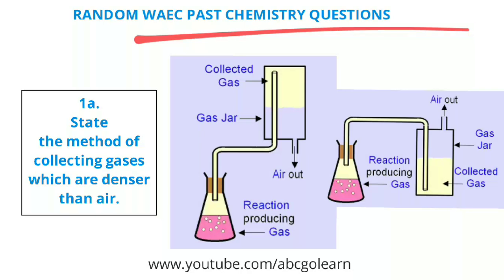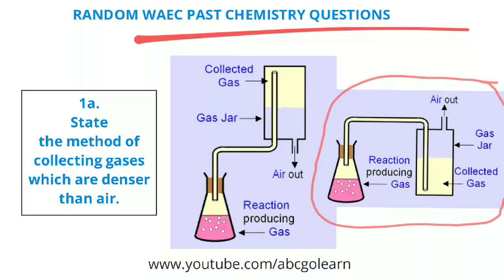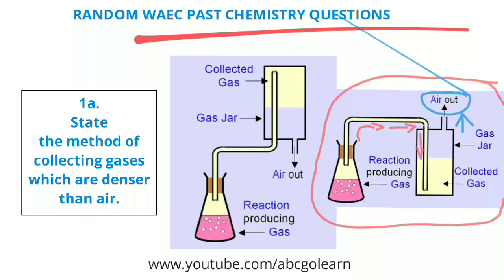The picture you can see right here captures it. The gas is being delivered downwardly — you can see it going downward. But the air that is inside that gas jar is being displaced upwardly — it's being taken out upwardly. So that's the meaning: the gas is delivered downwardly while the air is displaced upwardly. Do you understand?